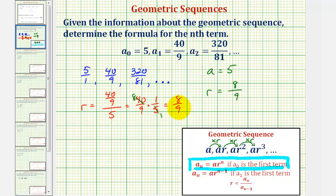So either way, r is eight ninths. Which means the formula for the nth term is a sub n equals a, which is five, times r raised to the power of n. So we'd have eight ninths raised to the power of n.